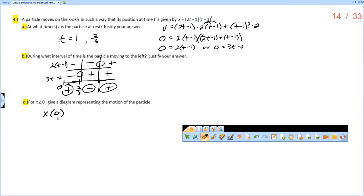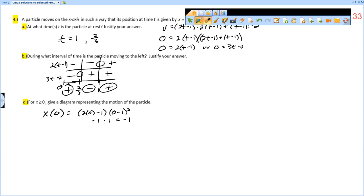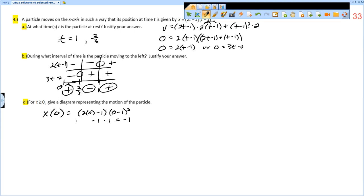We're first going to figure out where the object starts. I'm going to plug 0 in, so I get 2 times 0 minus 1, times 2 times 0 minus 1 squared. So 2 times 0 minus 1 is negative 1 times 0 minus 1 squared, that would be negative 1 squared. We're starting at a point of x equals negative 1 on our number line or x-axis. So x of 0 is negative 1.